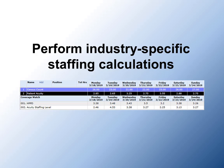Another healthcare example is acuity-based staffing. Instead of raw patient counts, the number of staff scheduled is based on the intensity of nursing care required by each patient. By entering acuity numbers, ScheduleAnywhere can show you if you have enough nurses scheduled. If your business performs industry-specific calculations to ensure proper staffing and compliance, ScheduleAnywhere can help.